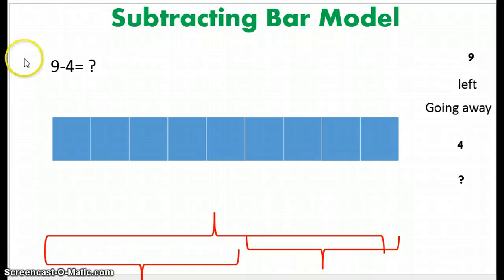The problem that we have here to solve is 9 minus 4 equals, I don't know, a question mark. So with the subtracting bar model, you always start with the whole bar. Notice here, according to our problem, it says 9 minus 4.